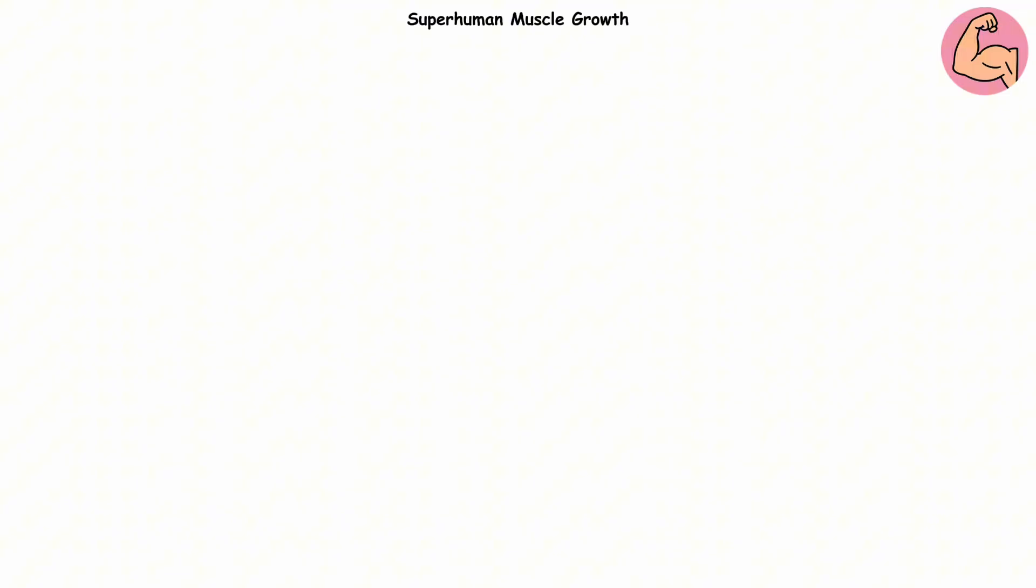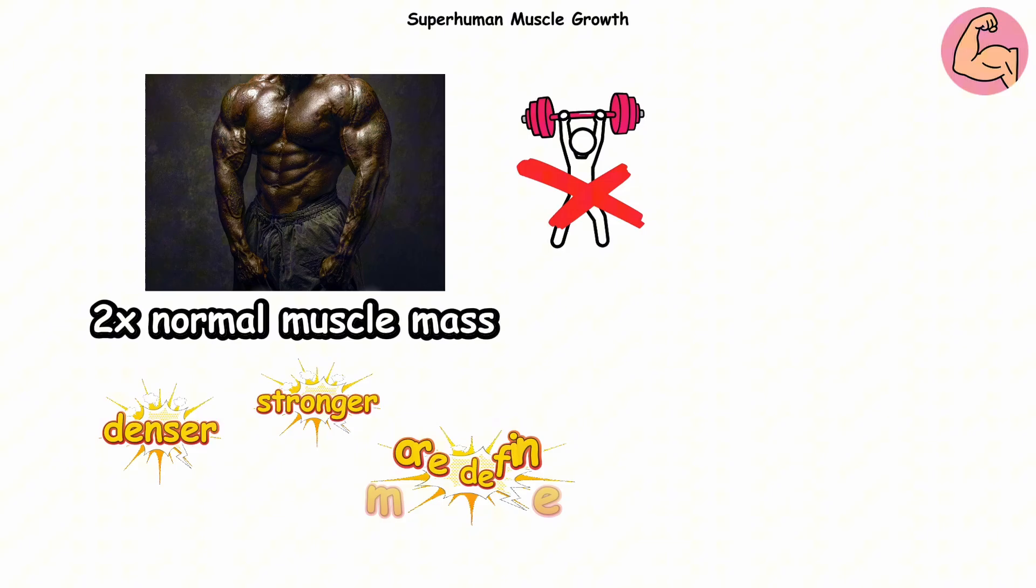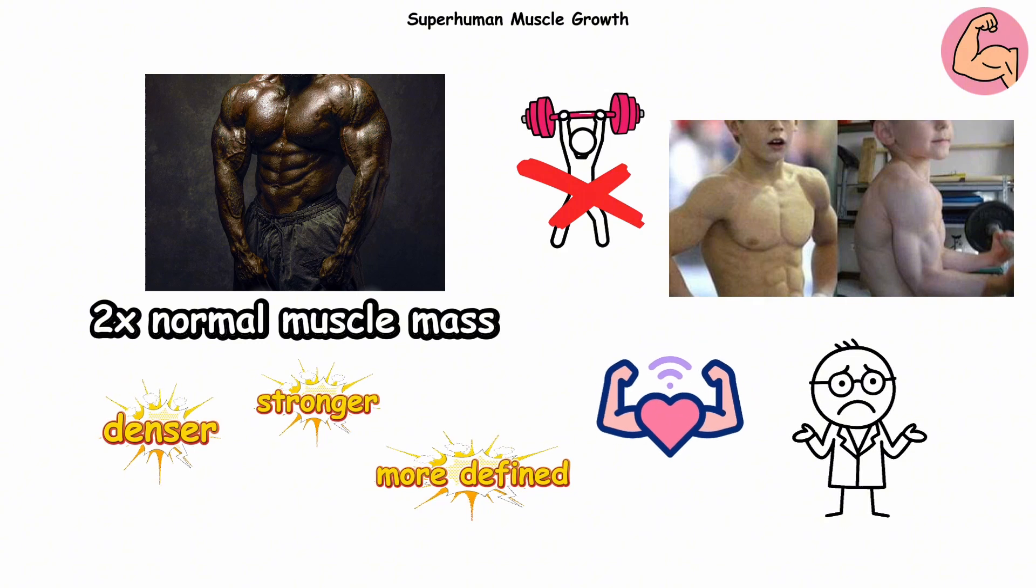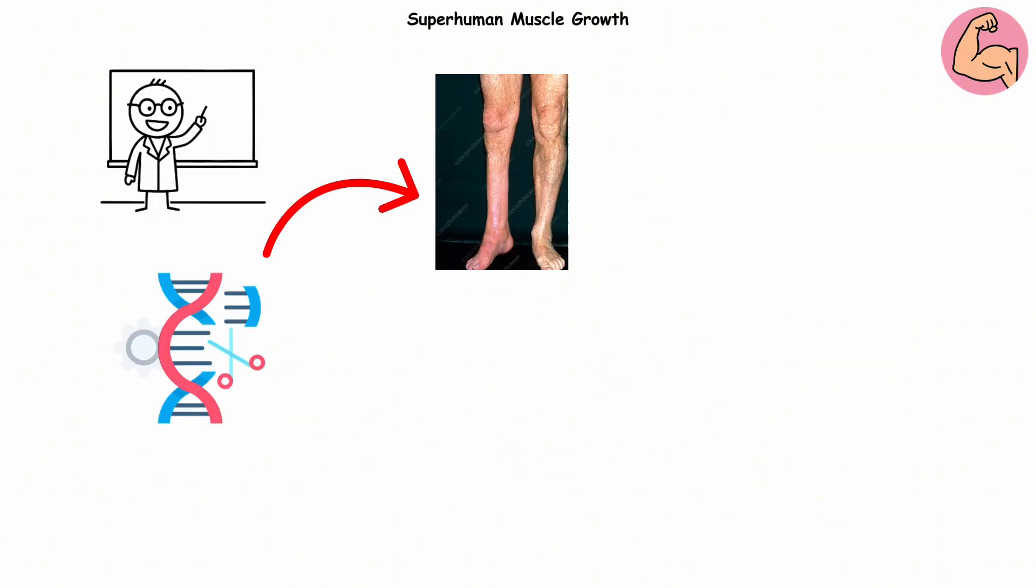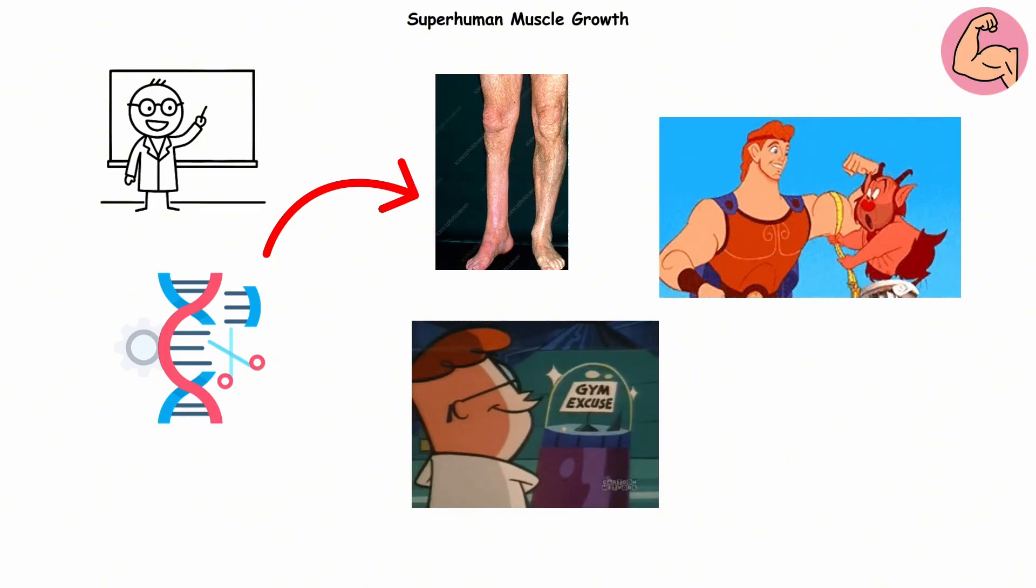People with this mutation can have twice the normal muscle mass, even without lifting. Their muscles are denser, stronger, and more defined, often from childhood. And no, it's not dangerous. Their bodies just skip the limiter everyone else has. Scientists are studying this gene for potential muscle-wasting treatments. But for now, it's the closest thing humans have to a real-life Hercules mode. No gym membership required.